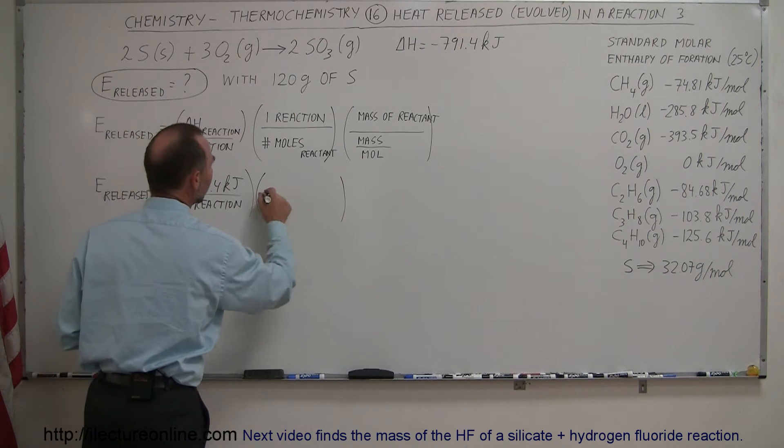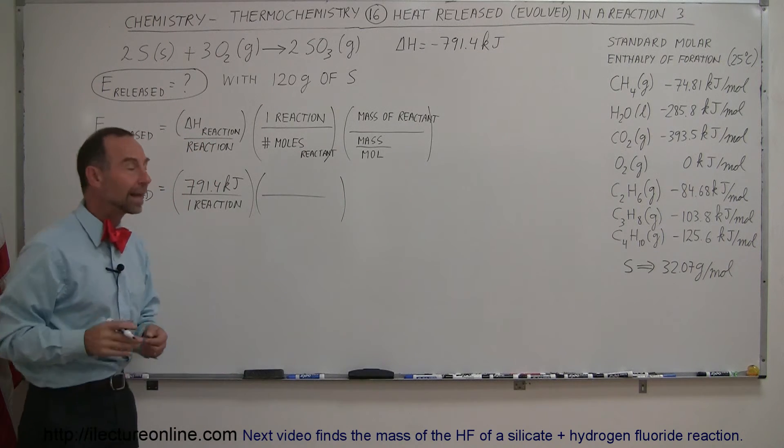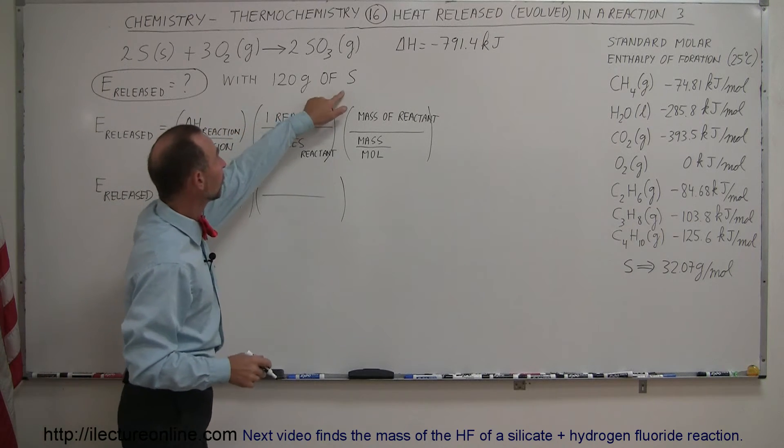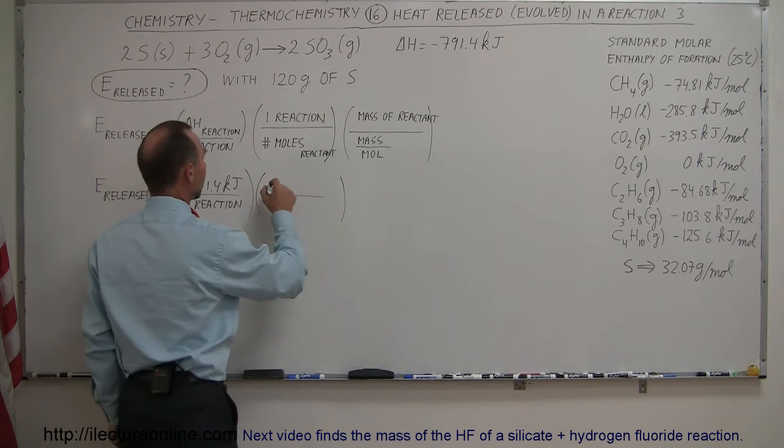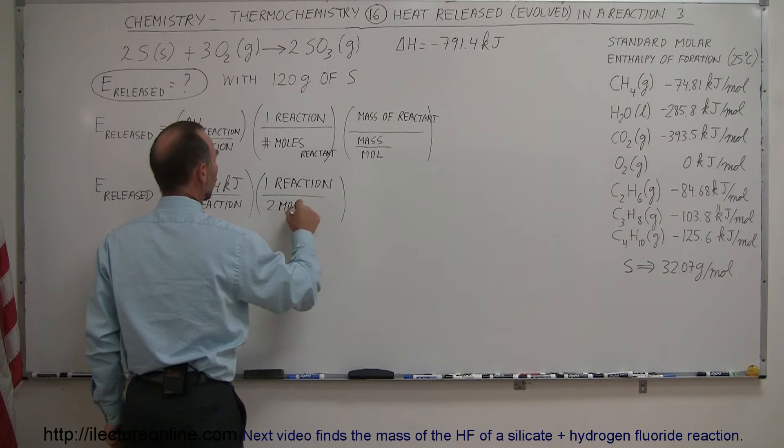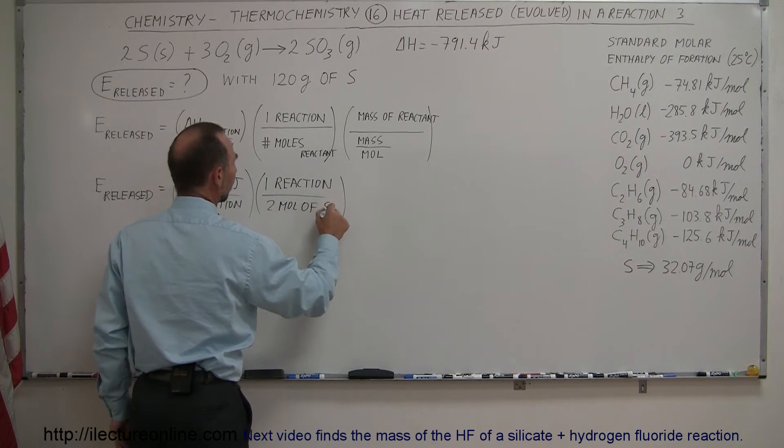Now here we're going to put in the ratio that determines the number of moles in the reactant for that reaction. In this case, we're dealing with sulfur and we have 2 moles of the sulfur. So one reaction contains 2 moles of sulfur.